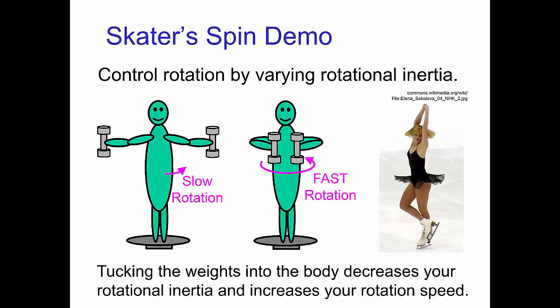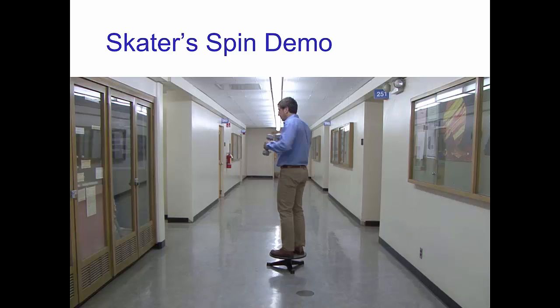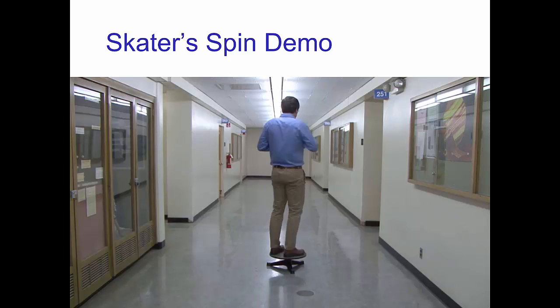The effect is even more dramatic when you're holding weights in your hands. Here you see me demonstrating this variation in rotation speed. You may have seen ice skaters do a similar trick, spinning very fast when they bring their arms in. The change in rotation can be quite large.